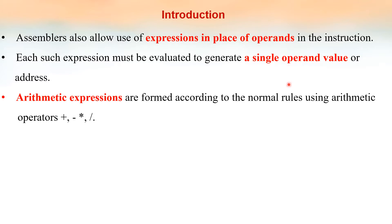So, what is meant by an expression? An expression means you will have some variables and you will have some operators connecting those variables. For example, a plus b is an expression. If there is an equal-to symbol, then it will be an equation — a plus b equal to 5 is an equation. Just a plus b means it is an expression. So in assembly language instructions, instead of giving operands as direct values, we can give expressions.